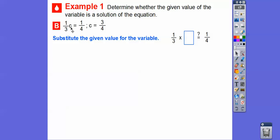which is 1 third times c, we're going to plug in 3 fourths for c. So it's going to be 1 third times 3 fourths. So let's go ahead and plug that in. And then we're going to simplify.